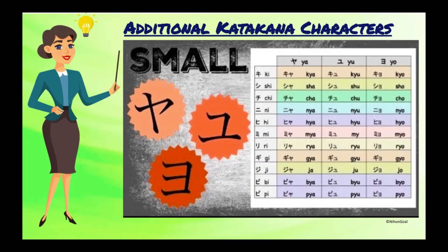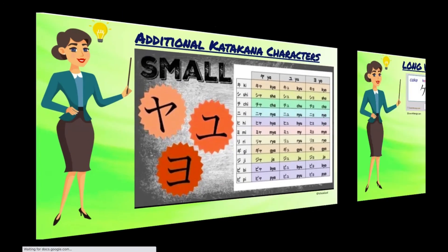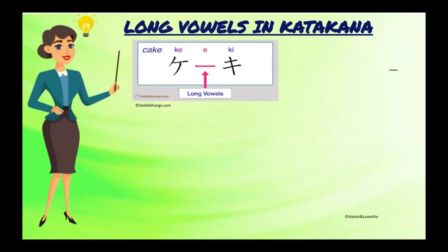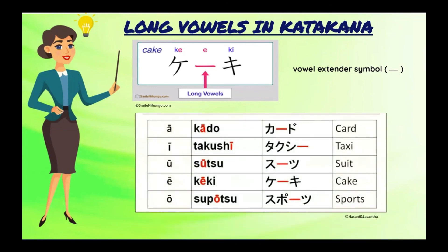All in all, these are the additional katakana characters using the small ya, yu, and yo. We also have long vowels in katakana, which are represented by a dash or small line symbol — unlike in hiragana where you really need to spell the double or long vowel. For example: kado, takushi, sutsu, keiki, supootsu.